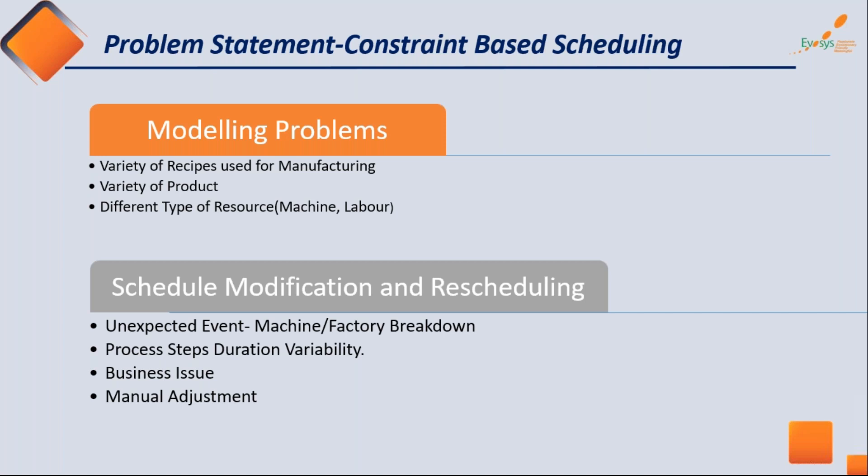We have also found scheduling modification and rescheduling as a problem statement, where there are unexpected events like machine or factory breakdowns. Those working on a manufacturing floor will understand: machines can break down at any point in time. Process step duration variability is another issue — something planned may take more or less time than expected, causing scheduling problems.